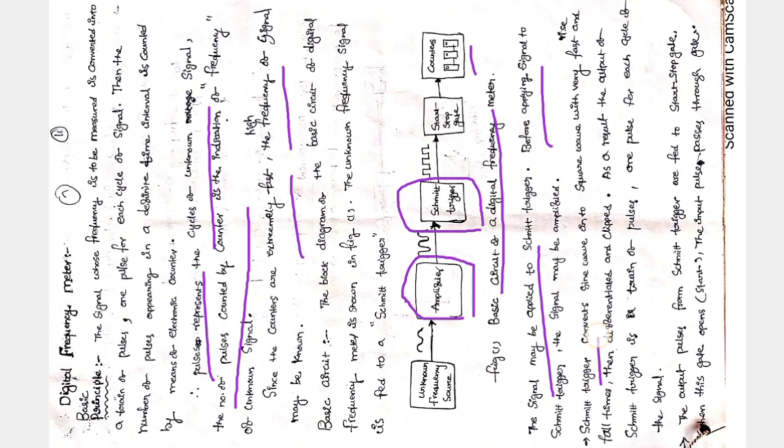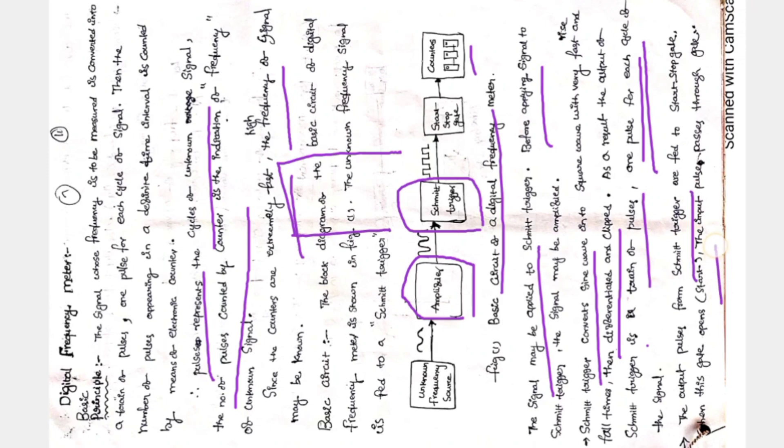The Schmitt trigger converts a sine wave into a square wave with very fast rise and fall times. The differentiator and clipper produce a train of pulses as the output of the Schmitt trigger — one pulse for each cycle of the signal. The output pulses from the Schmitt trigger are fed to the start and stop gate. When the gate opens, input pulses pass through to the counter, which counts the frequency displayed on the readout.